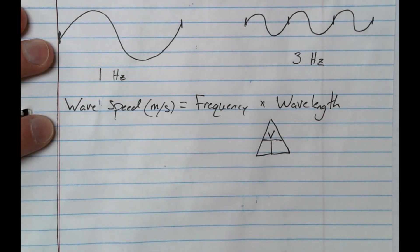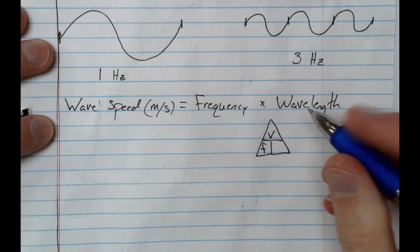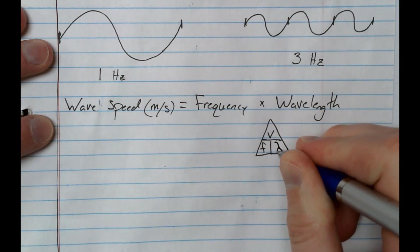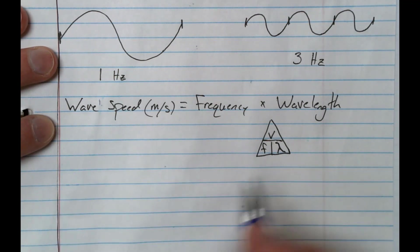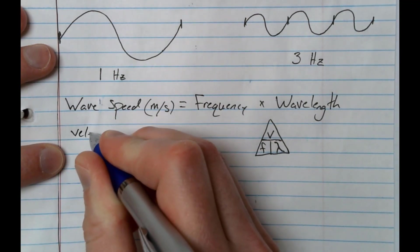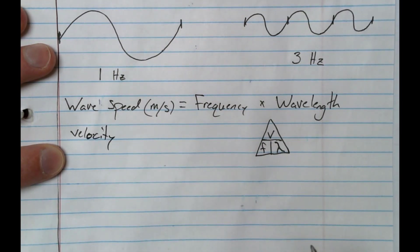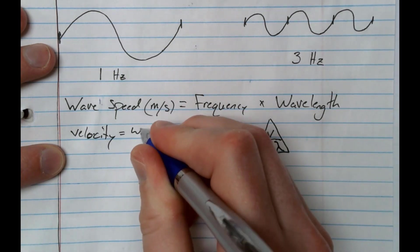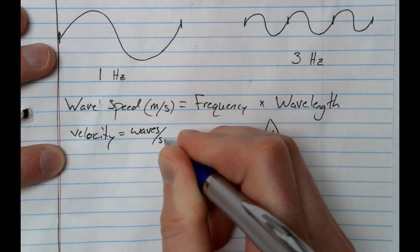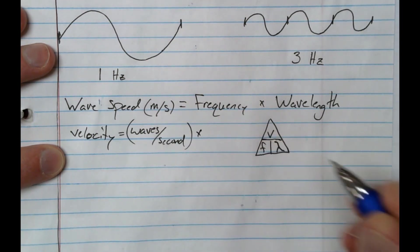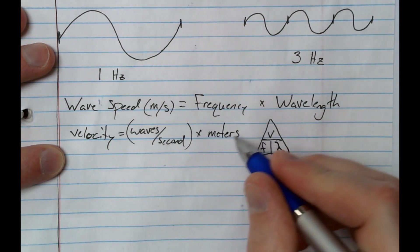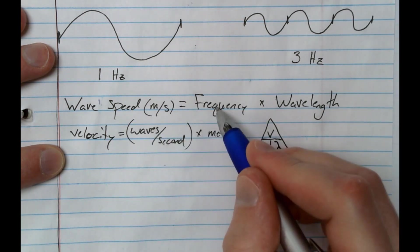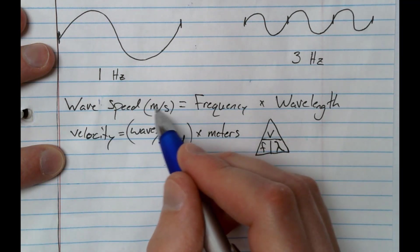We have our velocity, our frequency, and the upside down y, and it's called lambda. But that's our wavelength. So if I rewrite this even a little bit, we have velocity is equal to waves per second times meters. So my meters is wavelength, my waves per second is my frequency, and my velocity is my meters per second, my wave speed.